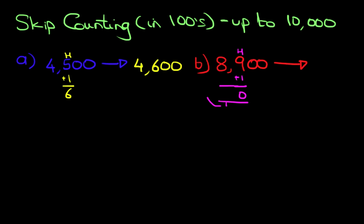Well, now we've got to add 1 to the 8. That becomes 9. 9,000. Don't forget the 00 here does not change. 8,900, the next number is 9,000.